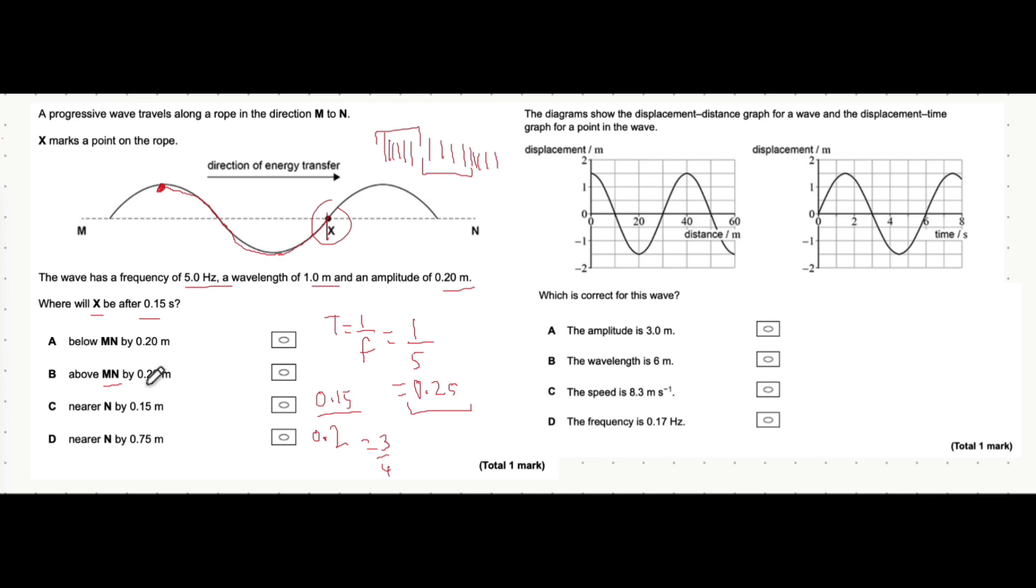That means it's above MN by 0.2 meters because we know the amplitude of this wave is 0.2 meters. So that would be option B.